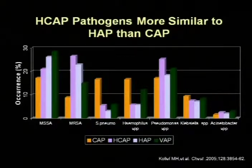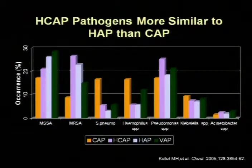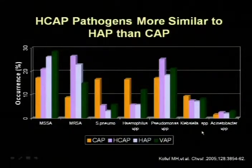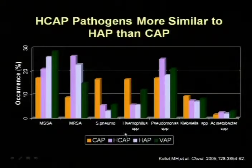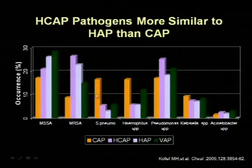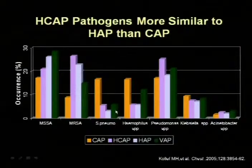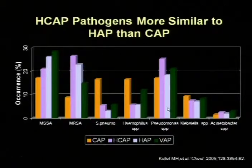Just to finish out the description of HCAP — if you look at the types of bugs, patients with community-acquired pneumonia are going to have things like strep pneumoniae, haemophilus, and probably some pseudomonas in certain situations. But patients with HCAP are going to have more gram-negatives, they're going to have more MRSA, and in terms of the types of organisms, they're going to look more like nosocomial, hospital-acquired, or even ventilator-associated pneumonias. That's the point of this slide.